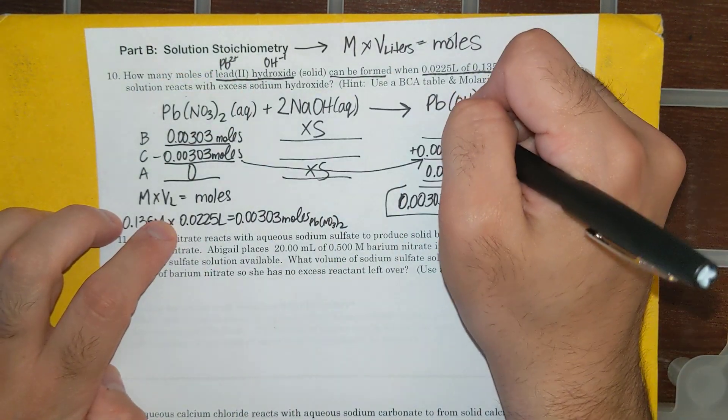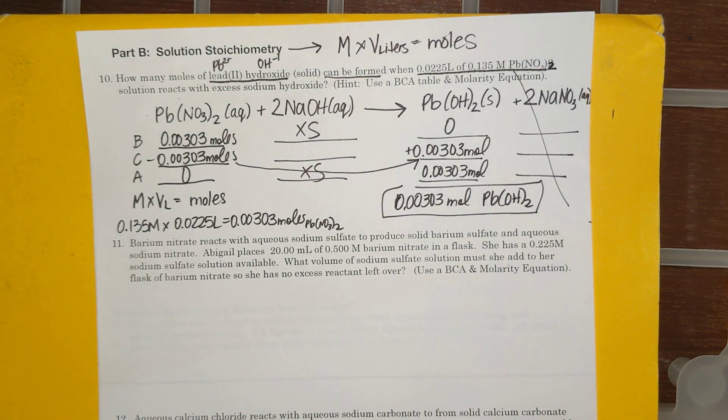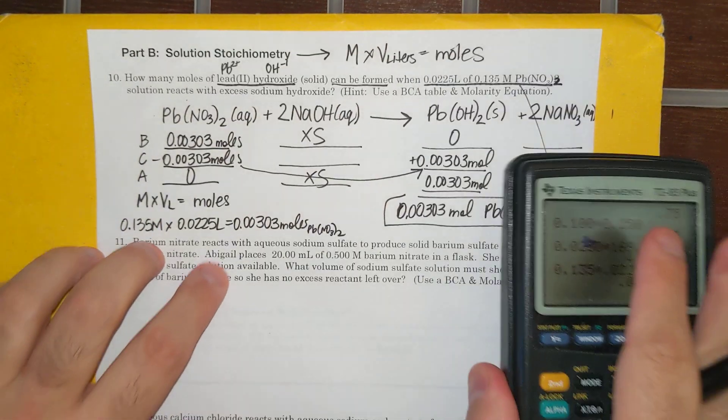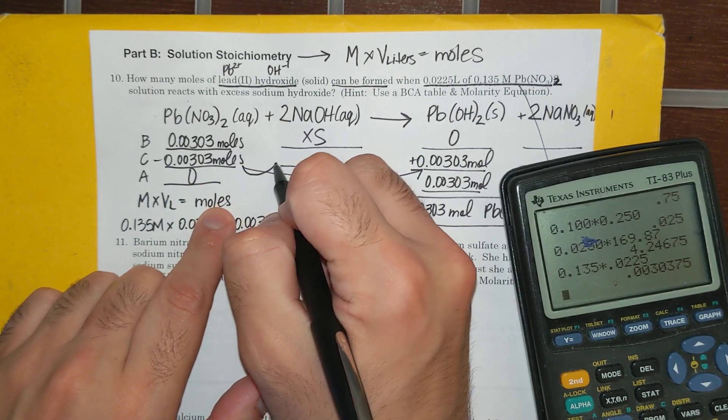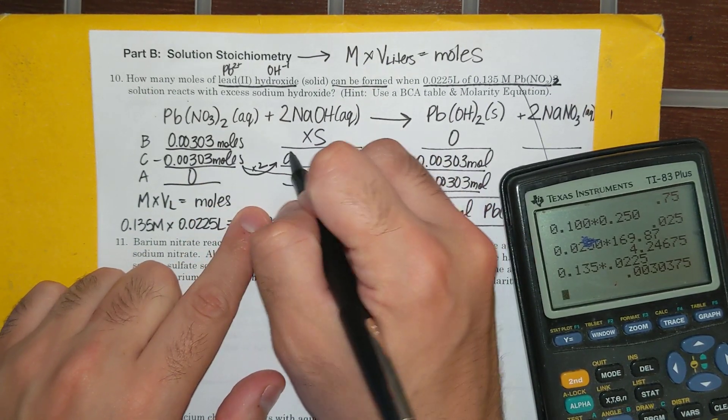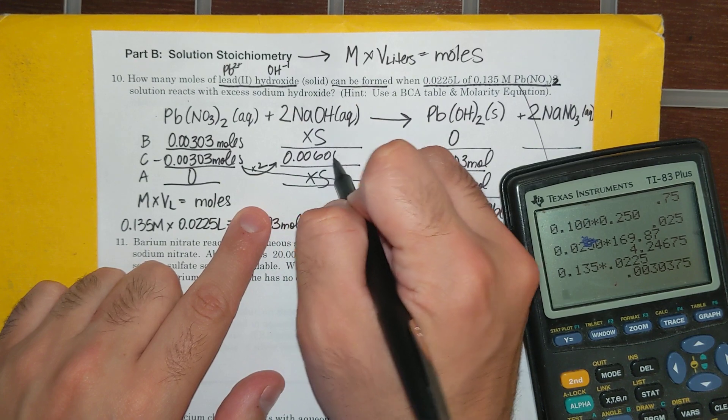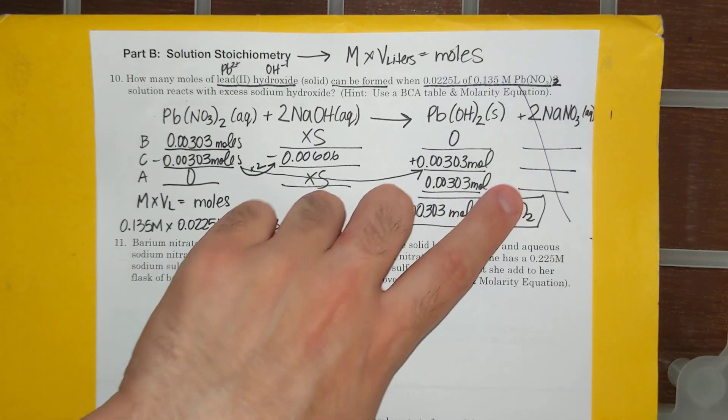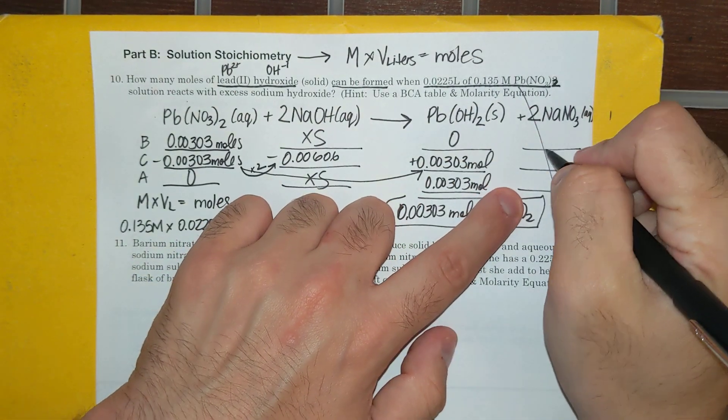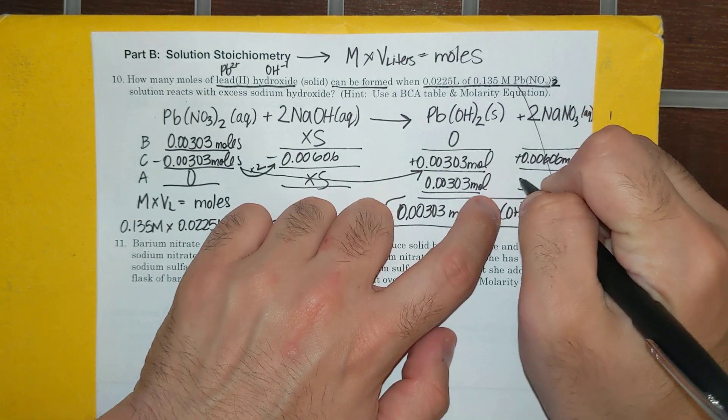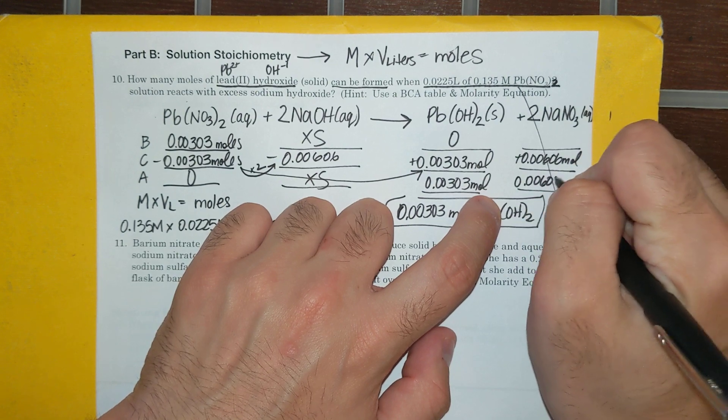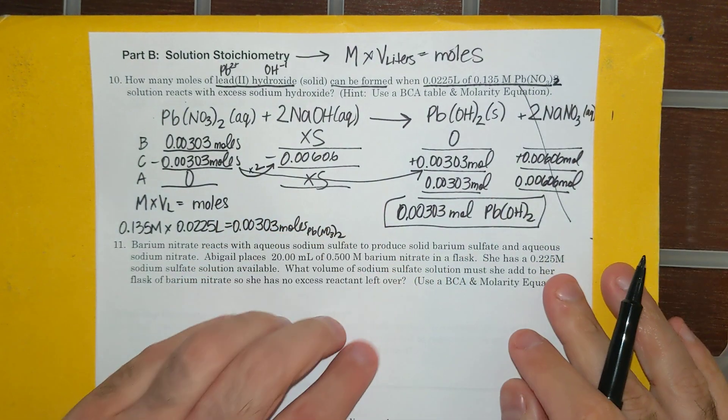Alright, and you can start at 0 here. Now, if I wanted to figure out how many moles of sodium hydroxide I use, I would just multiply this by 2. Right? So this would be 0.00606 was used. And then that's how many moles of sodium nitrate would be made, 0.00606 moles. It's a 1 to 2 ratio, just in case it was asked, but it wasn't.